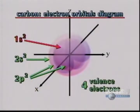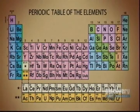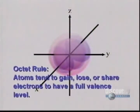However, elements in the second period need eight electrons to fill their valence level. According to the octet rule, atoms in the first and second periods tend to gain, lose, or share electrons to have a full valence level.